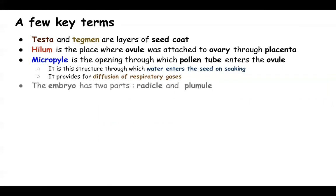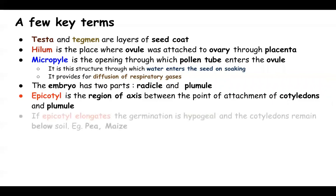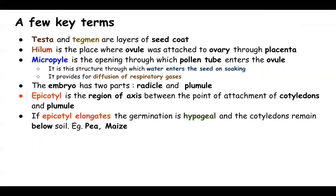The embryo has two parts: radicle and plumule. The radicle forms the future root, and the plumule forms the future shoot. The epicotyl is the region of the axis between the point of attachment of the cotyledons and the plumule. The hypocotyl is the region between the cotyledons and the root.